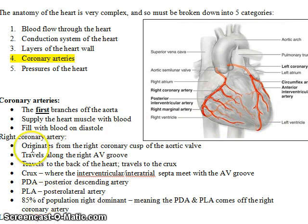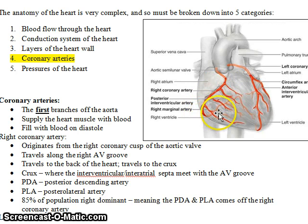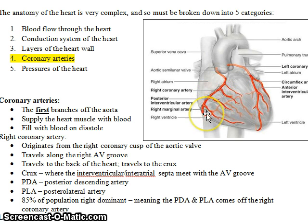The right coronary artery originates from the right coronary cusp of the aortic valve. It travels along the right AV groove — the right atrioventricular groove — and travels to the back of the heart to the crux. The crux is where the interventricular and interatrial septum meet with the AV groove — imagine an imaginary cross at the back where the two grooves come together.